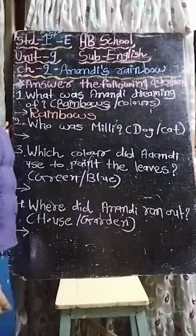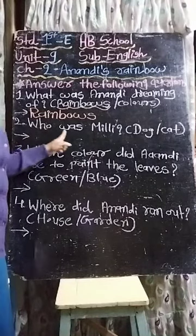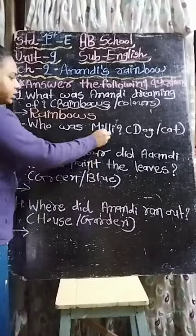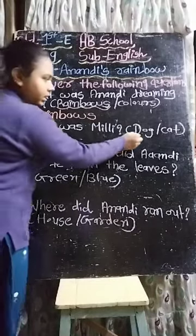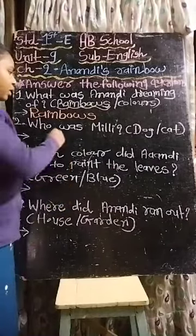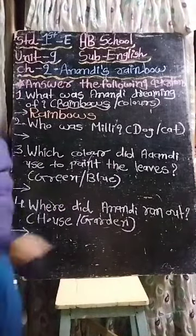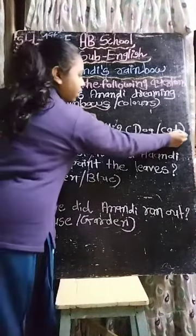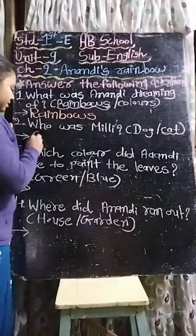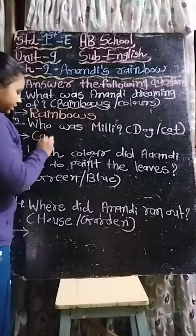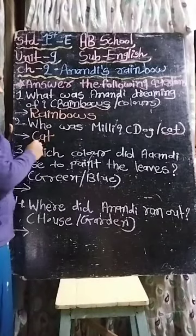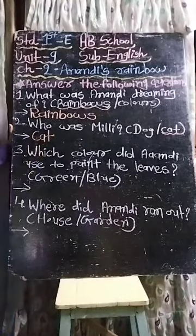Now second one: Who was Mili? Mili kaun thi? Dog thi ya cat? Mili was a cat. So write down the answer here: cat. Mili was a cat.